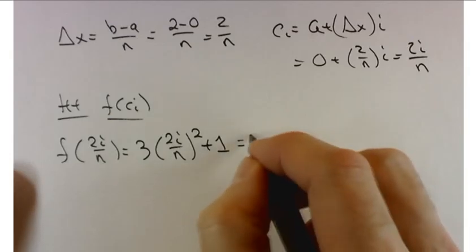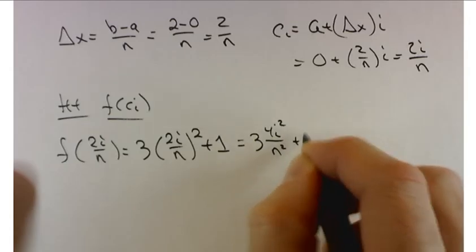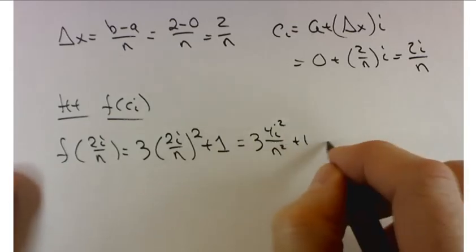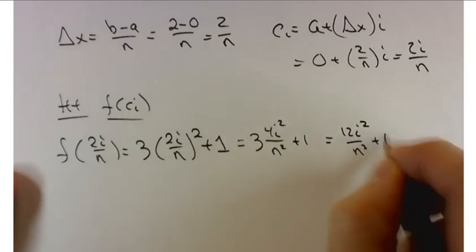Squaring that out, that's 4i² over n² plus 1. Or better yet, 12i² over n² plus 1.